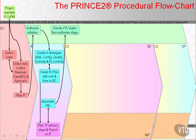The PID and the Next Stage Plan are presented to the Project Board for two decisions in two activities. Authorise the Project considers the PID, while Authorise a Stage or Exception Plan considers the First Delivery Stage's Stage Plan. The Official Manual describes these as two separate activities, and explicitly makes the point that they may be as informal as the participants prefer. In reality, both activities are pretty likely to result in a single conversation, and probably a minuted meeting.